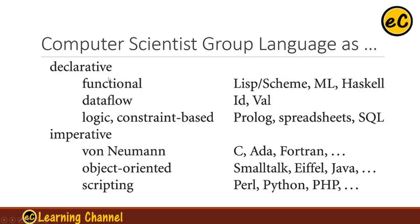The declarative type can also be named as the rule type, basically setting up different rules either by function, by data flow, or by logic. The functional languages include Lisp, Scheme, ML, and Haskell. The data flow model languages include ID and VAL. The logic programming constraint-based languages include Prolog, Spreadsheet, and SQL. Basically, this is the rule-based category.